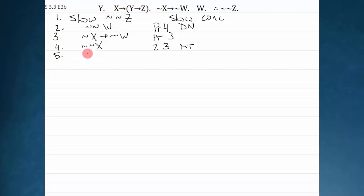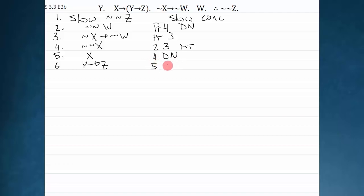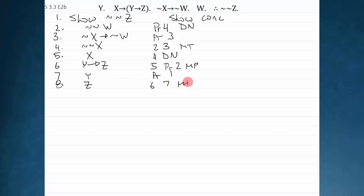With not not X, I can do a modus ponens here, but first I just need to get rid of those double negations with double negation. Now I can combine line five with premise two and do a modus ponens to get Y arrow Z. That's line five combined with premise two, modus ponens. Finally, I notice I do have a Y — that's premise one — and now I can do a modus ponens with lines six and seven to get Z. That's lines six and seven, modus ponens.